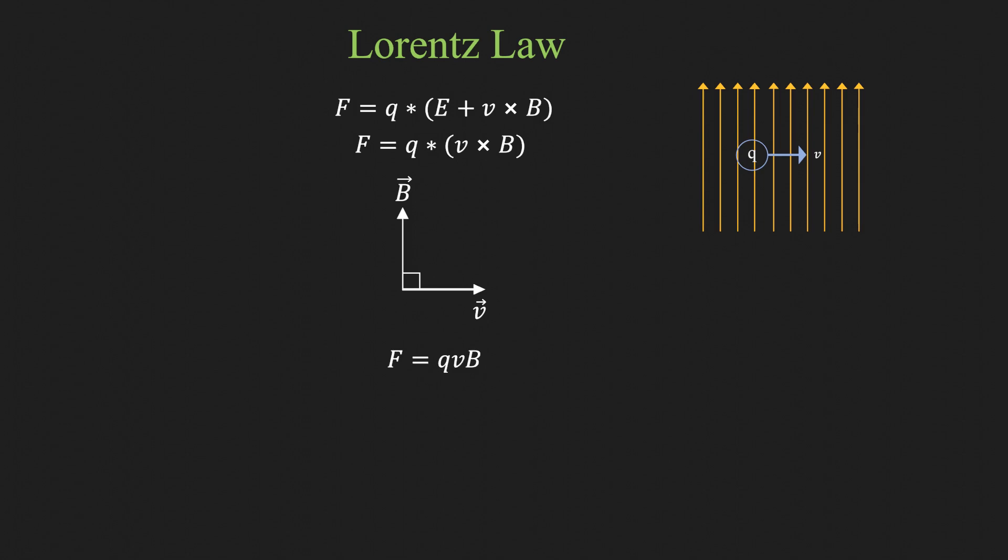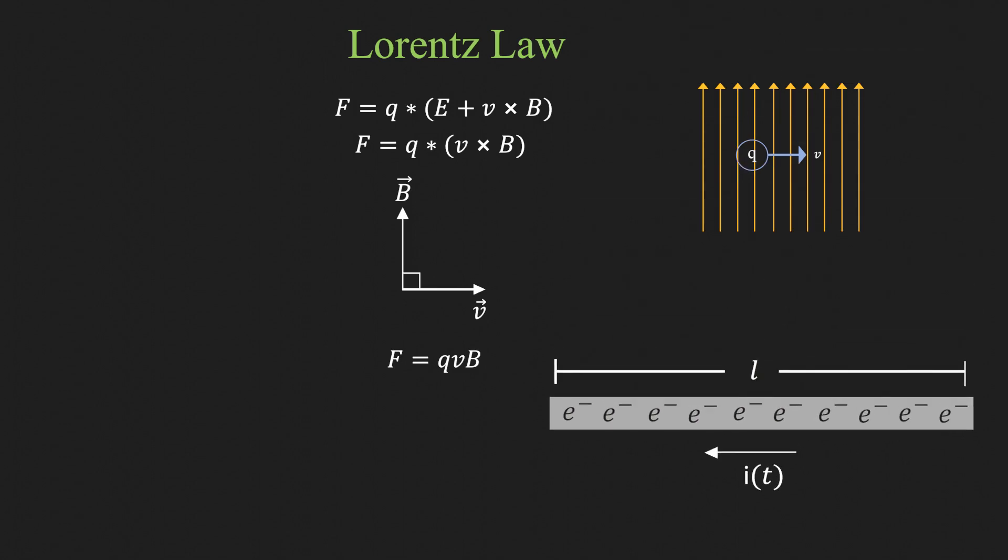Now the current flowing in the conductor can also be thought as the charges moving in it. Since the length of the conductor is l, the velocity of the charges can be written as distance upon time. On substituting v as l/t, we get F = q·l/t·B. Rearranging this equation and substituting q/t as the current, we get the well-known BIL law.